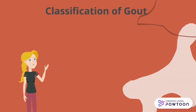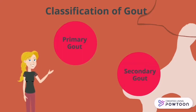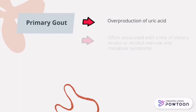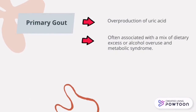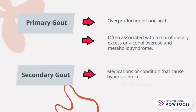There are two classifications of gout: first is primary gout, and second is secondary gout. Primary gout is caused by overproduction of uric acid and is often associated with a mix of dietary excess, alcohol overuse, and metabolic syndrome. Secondary gout is caused by medication or conditions that cause hyperuricemia, for example renal failure.